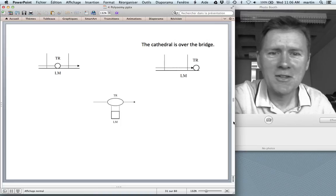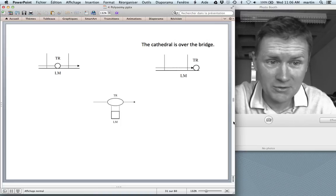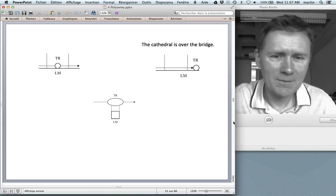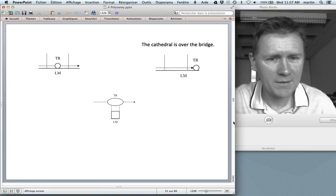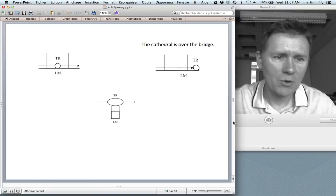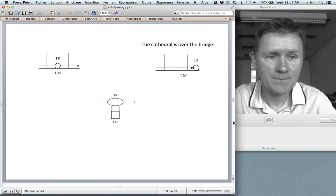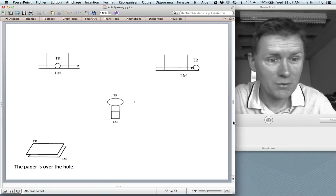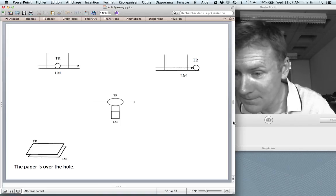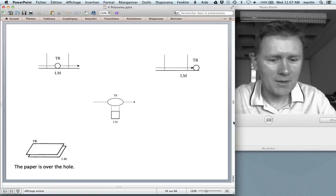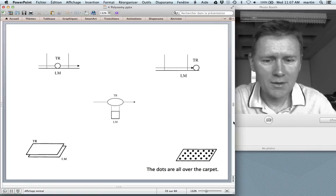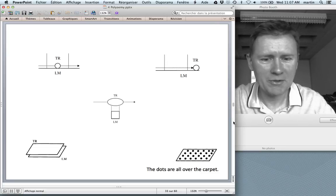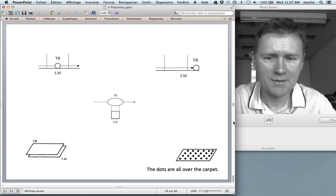I can even say something like the cathedral is over the bridge. Now the cathedral didn't exactly cross the bridge to get there. Maybe the individual stones had to be carried over the bridge. But certainly the cathedral isn't moving anywhere. But what I want to say with this is that if you want to see the cathedral, you have to go over the bridge and there it will be. Another sense of over is that the paper is over the hole. It's covering the hole. We can't see the hole. Can you? No, I can't. And another sense of over, the dots are all over the carpet. Meaning that there are evenly distributed across the surface of the carpet.